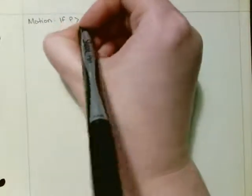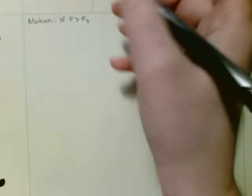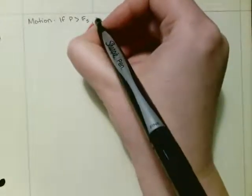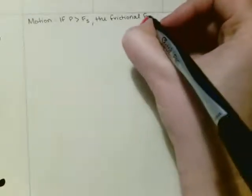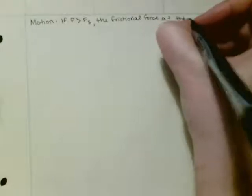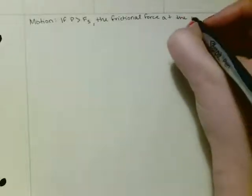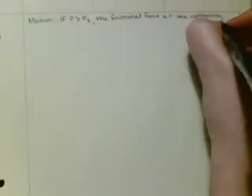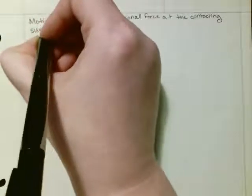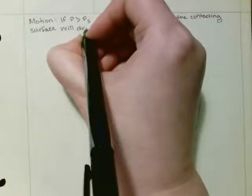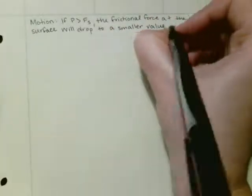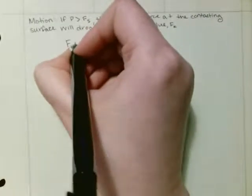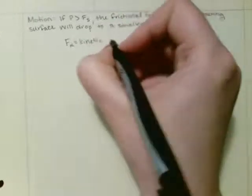Now we're talking about once you've already got it moving — so that's if your P is bigger than your static friction and you've already gotten it to move. Once you've gotten it to move, the frictional force at the contacting surface will drop to a smaller value Fk, which is your kinetic frictional force. Kinetic, meaning it's already in motion. Just like static friction, Fk equals mu k times N, where mu k is the coefficient of kinetic friction.